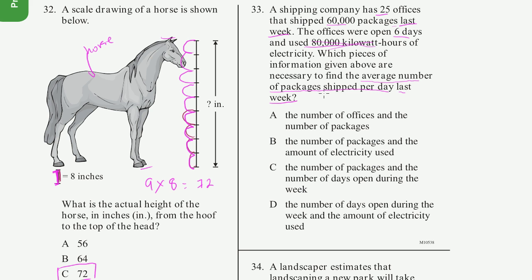And they're saying the average number of packages shipped per day last week. They're not saying per day per office last week. So we don't need to know how many offices. We just need to know that 60,000 packages were shipped last week, and the offices were open 6 days. So they operated for 6 days. So we can figure out the answer. The answer is obviously 10,000. But they're not asking us that.